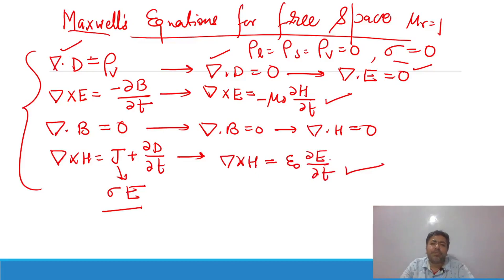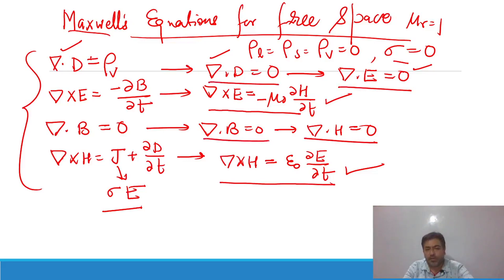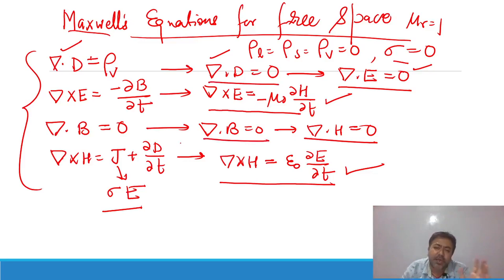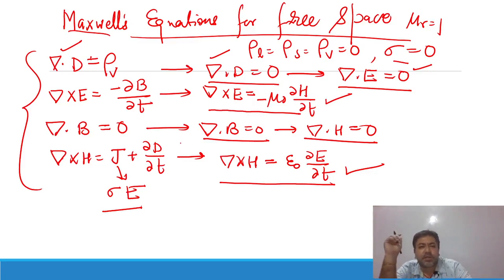So for free space, the point form of Maxwell's equations becomes: ∇×E = −μ₀ ∂H/∂t, ∇×H = ε₀ ∂E/∂t, ∇·E = 0, and ∇·H = 0. This tells us that both the divergence of electric field intensity and magnetic field intensity are zero in free space. These are Maxwell's equations for free space in point form.